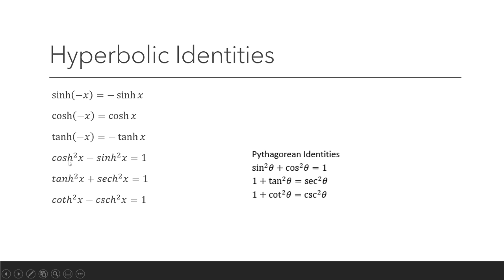As you can see, the signs are reversed. Here, hyperbolic cosine squared x minus hyperbolic sine squared x is equivalent to 1, whereas for regular trig functions it is plus. The same applies with hyperbolic tangent and hyperbolic secant — they also have different signs. The same goes with hyperbolic cotangent and hyperbolic cosecant. You have to familiarize yourselves with these hyperbolic identities because they differ from the regular trigonometric identities.